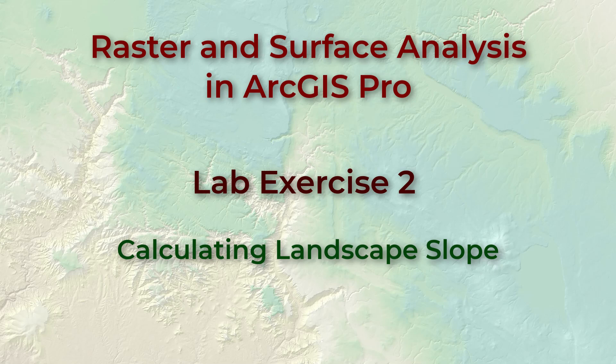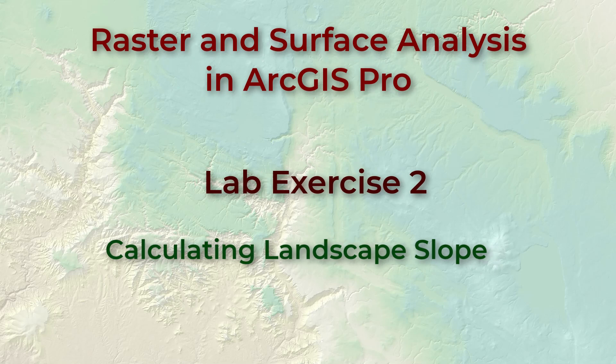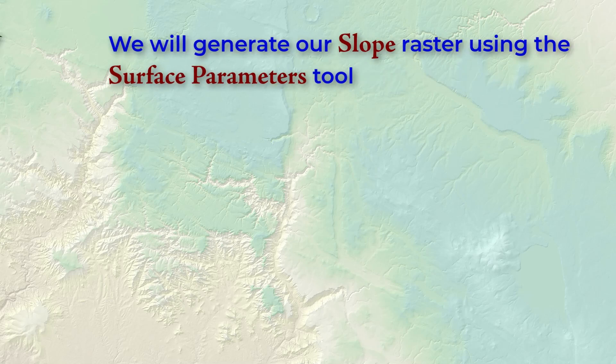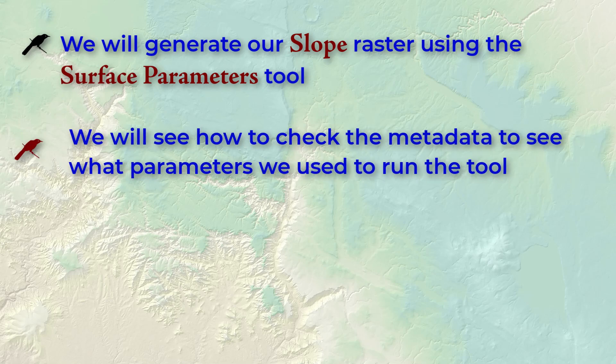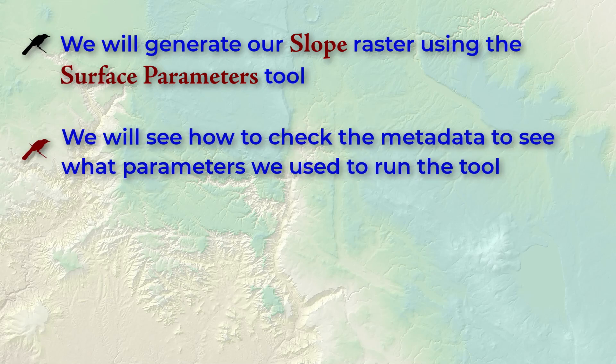Hello everybody, this is Jeff Jeunesse. Welcome to our second lab exercise on raster analysis. Here we're going to see how to generate a slope raster from a DEM using the surface parameters tool. We'll also take a look at how you can remind yourself of how you set up a tool by looking in the metadata.